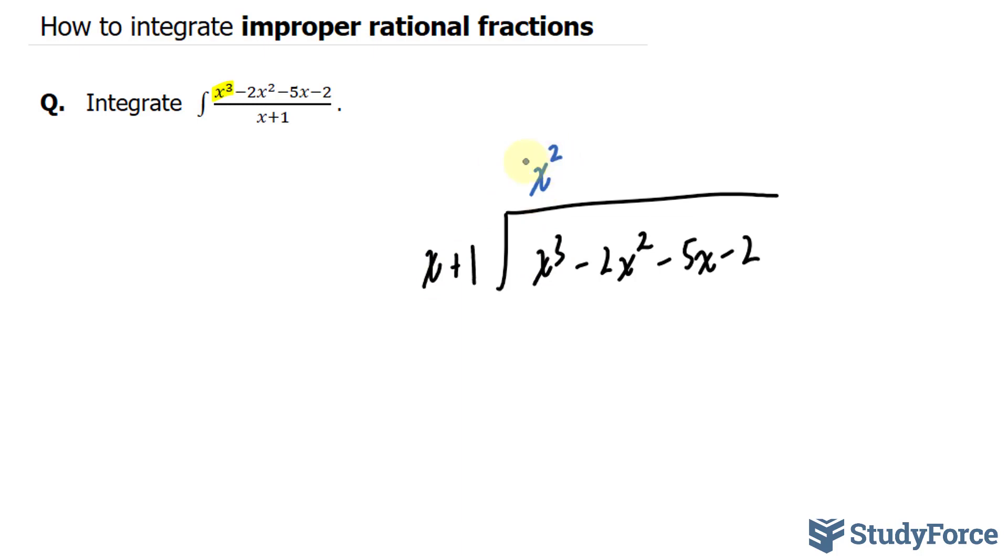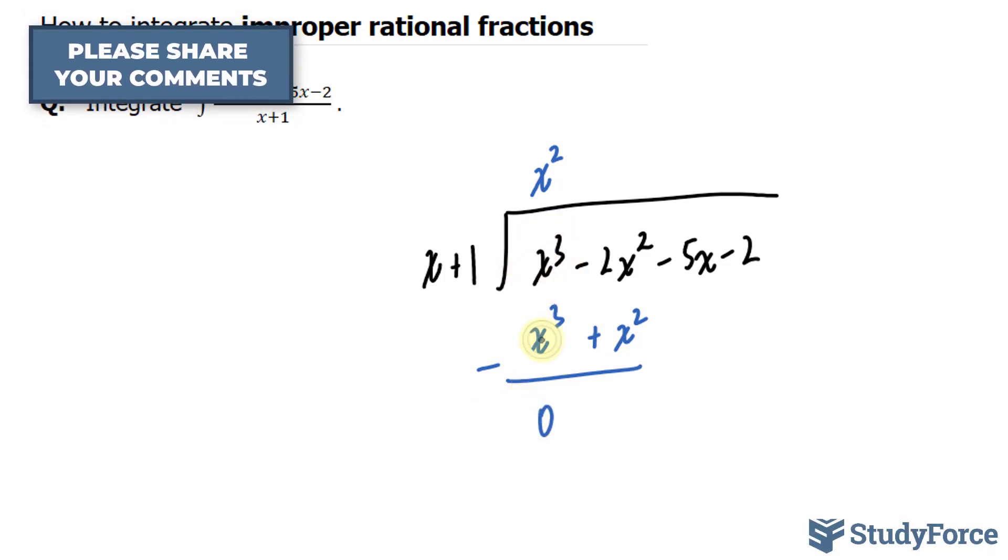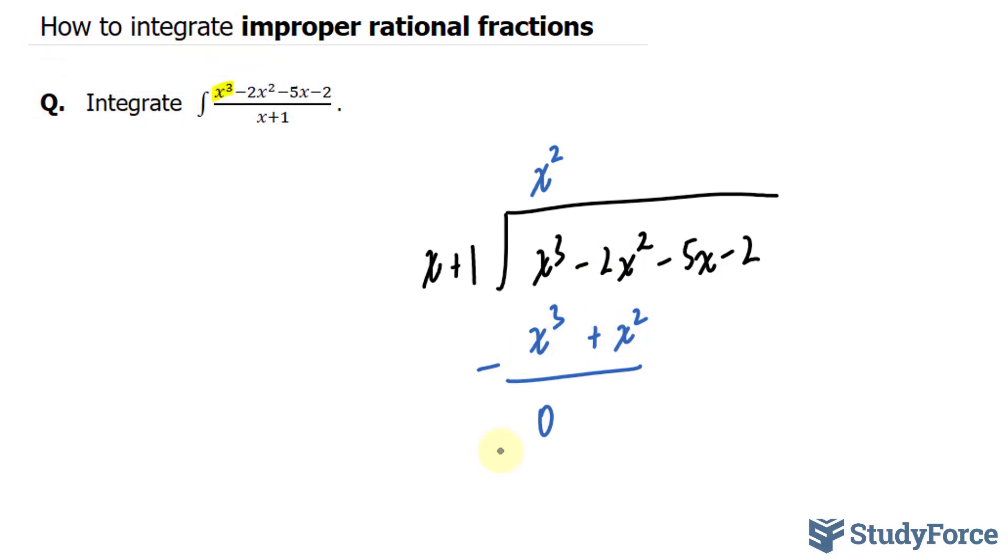And to do that, I use the quotient rule for the laws of exponents. x to the power of 2 times x gives us x to the power of 3. And x to the power of 2 times 1 gives us plus x squared. Now I'll subtract this binomial with this binomial. This gives us 0. This term with this term, negative 2x squared minus x to the power of 2 gives us negative 3x squared.